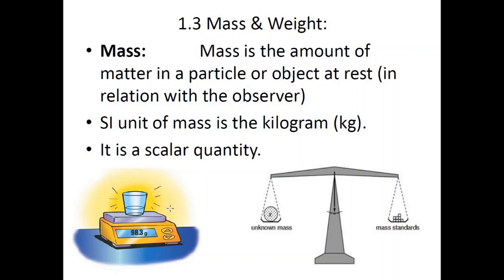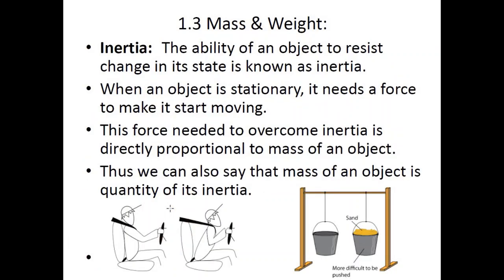Inertia is the ability of an object to resist change in its state — the reluctance of an object to change its state of motion. When an object is stationary it needs a force to make it start moving, because the object tries to resist that change. Similarly, if an object is moving, you need to apply a force against it to stop it; otherwise it tries to keep on continuing its course of motion. That reluctance is known as inertia.